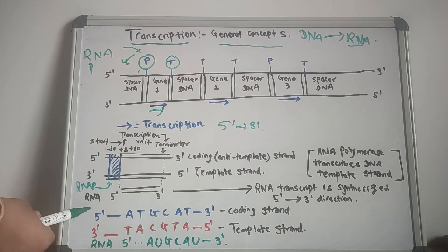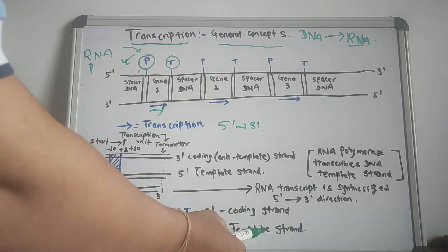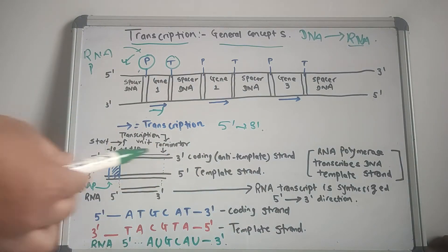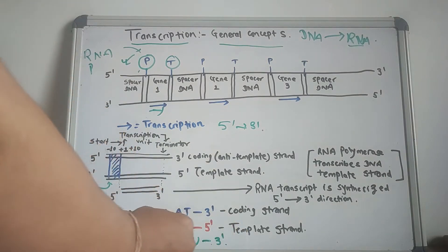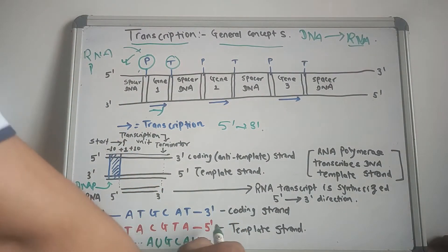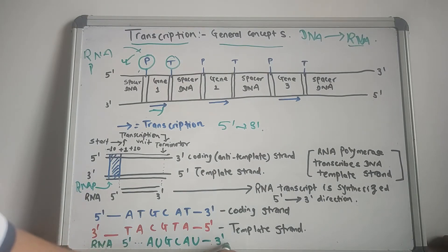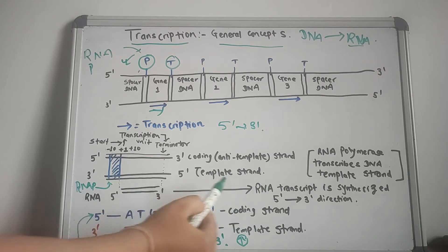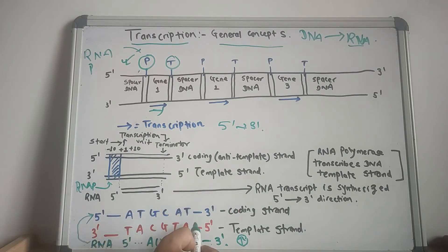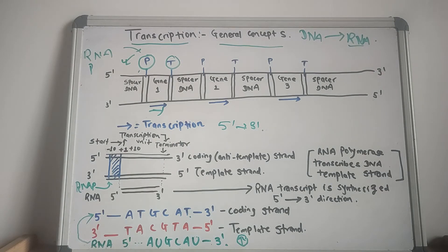In the DNA there are two strands: the coding strand and the template strand. The RNA polymerase uses the template strand for the production of RNA, so the RNA is antiparallel and complementary to the template strand. But the RNA copy is exactly the same as the coding strand, except that it contains uracil in place of thymine. The coding strand is not used during transcription; it is identical in sequence to the RNA molecule except that RNA contains uracil instead of thymine found in the DNA.